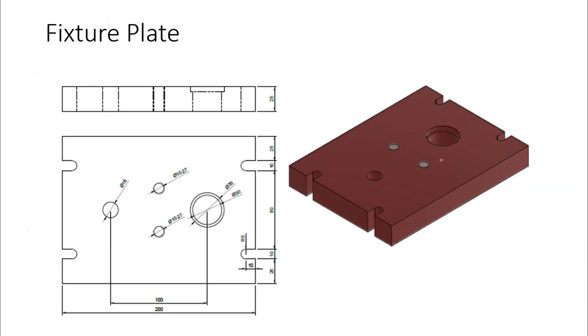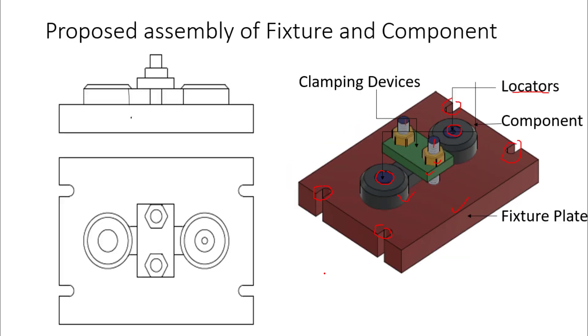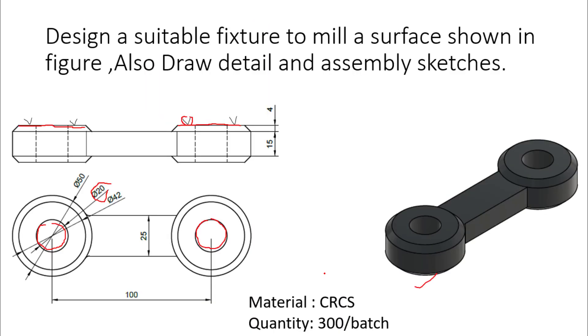First we need to design the fixture plate. Dimensions of the fixture plate can be found from dimensions of the component. We can see that the component has a length of 150mm. This is 100mm and both sides are 25mm.